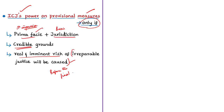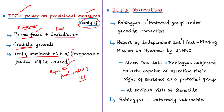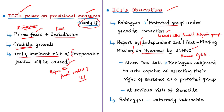The ICJ agreed that at least some acts alleged by Gambia are capable of falling within the Genocide Convention, which is why it took up the case. The court observed that the Rohingyas in Myanmar appear to constitute a protected group within the meaning of the Genocide Convention — intended to protect members of national, political, ethnical, racial, or religious groups. The ICJ referred to the report of the Independent International Fact-Finding Mission on Myanmar established by the UN Human Rights Council, which indicated that since October 2016 the Rohingyas have been subjected to acts capable of affecting their right of existence as a protected group.